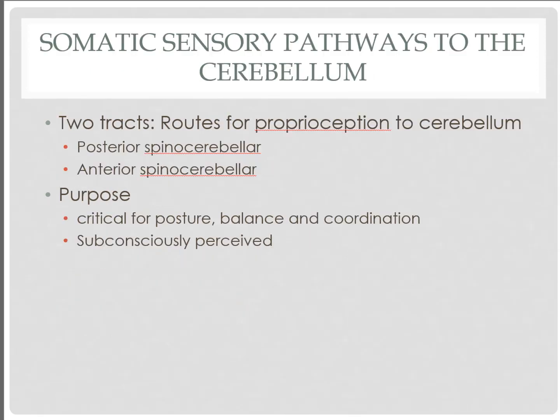Looking at pathways for proprioception, movement information travels not to the cerebral cortex but to the cerebellum, following the same posterior and anterior pathways — except these are the spinocerebellar tracts. Proprioceptive information from joints, muscles, and the inner ear is sent to the cerebellum, which is responsible for correcting unintended movements. This type of sensory information traveling to the cerebellum is typically subconscious — we're not consciously aware of our proprioceptive perception — but it is critical for posture, balance, and position. Everyday activities like walking, riding a bike, and eating could not be achieved without it.